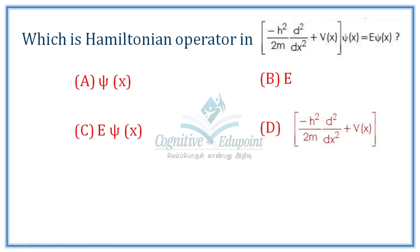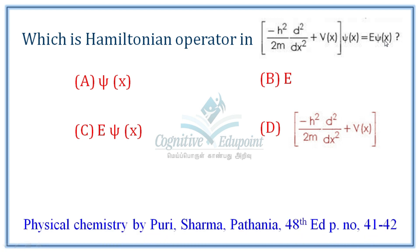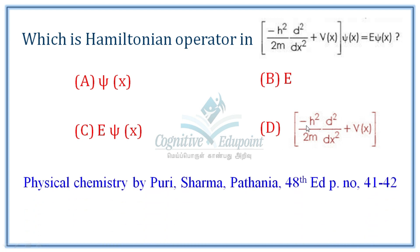Next question: Which is the Hamiltonian operator in the given Schrödinger equation? An operator operates on a wave function to give the wave function multiplied by an eigenvalue (energy). The Hamiltonian operator is: minus h-squared over 2m times d-squared/dx-squared plus V — the kinetic energy term plus the potential energy term in one dimension. Correct answer: D.